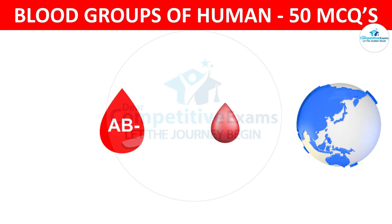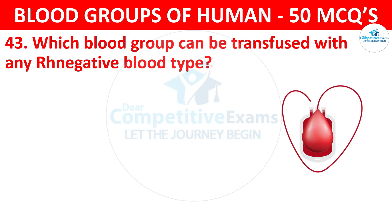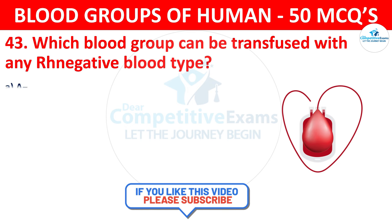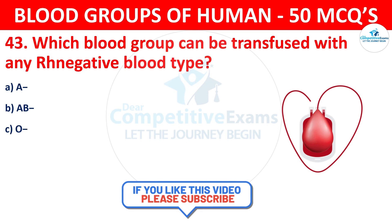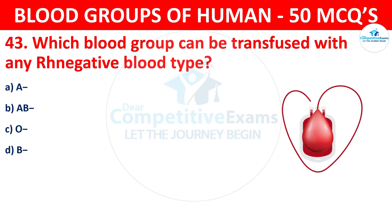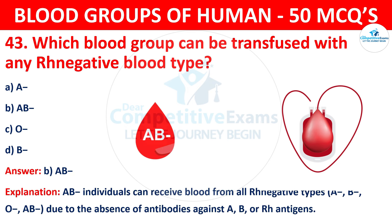Question 43: Which blood group can be transfused with any RH negative blood type? The correct answer is B, AB negative. AB negative individuals can receive blood from all RH negative types — A negative, B negative, O negative, and AB negative — due to the absence of antibodies against A, B, or RH antigens.